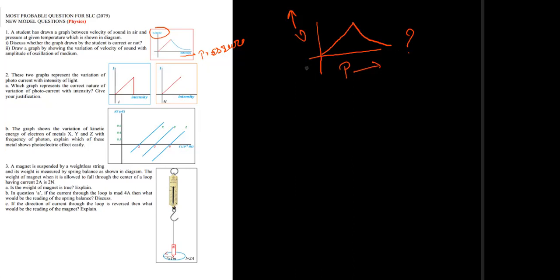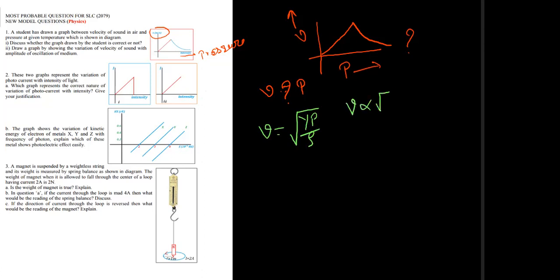To discuss this, we need to find the relationship between velocity and pressure. What is the correlation between velocity and pressure? We need to look at Newton's formula and Laplace's correction in the context of mechanical waves. The expression gives us v = √(γP/ρ), so velocity depends on this ratio.